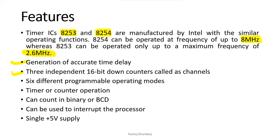Both ICs have three independent 16-bit down counters called channels. There are six different programmable operating modes, from mode 0 to mode 5. These two ICs can provide both timer and counter operations, and the count can be a binary number or a BCD (Binary Coded Decimal) number.